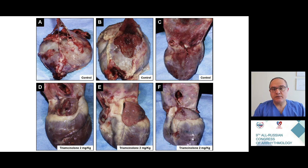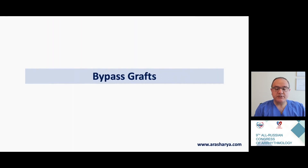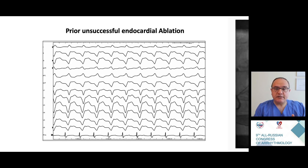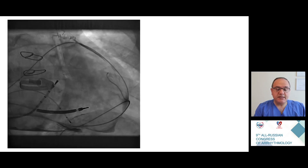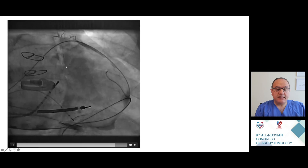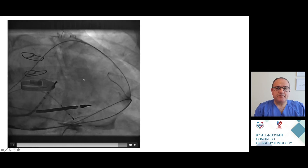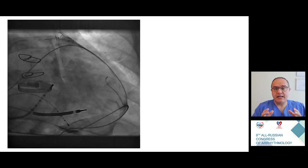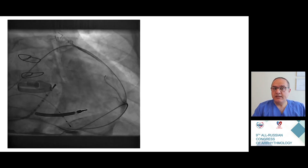Regarding bypass grafts: here is a patient with inferior wall myocardial infarction, negative concordance in epicardial lead, and prior unsuccessful endocardial ablation. Despite bypass surgery, we were easily able to access the epicardial space. It is interesting that we can actually visualize the grafts inside the epicardial space. In these patients it is very important to know the anatomy — the number of grafts, their location, and the location of the critical artery — to decide whether epicardial access is feasible.